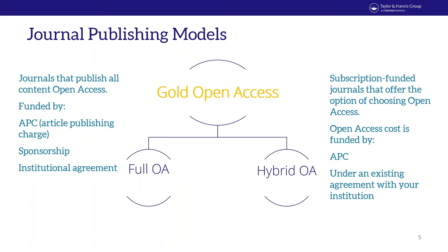There are many terms around open access — gold, green, bronze, diamond. Today I'll focus on gold open access, which essentially entails making the PDF version of record freely available online. There are two ways to publish open access with Taylor and Francis: in a full open access journal, or in a hybrid journal. Full open access journals publish all content openly and are not funded by subscriptions — most charge an APC, though some are funded by societies or institutional agreements.